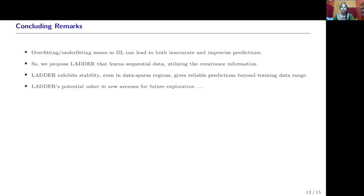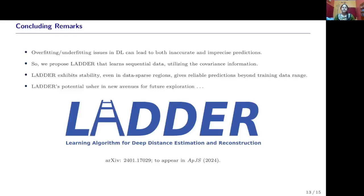Here, I will summarize my key takeaways. Given the possibility of overfitting and underfitting issues with deep learning that can lead to inaccurate and imprecise predictions in the context of cosmology, we hereby propose LADDER that learns sequential data utilizing the full covariance information within the data points. Reconstruction with LADDER exhibits stability even in data-sparse regions that can give reliable predictions beyond the training data range. Given the initial success, LADDER's potential will open up new avenues for future exploration. LADDER has been accepted for publication in the ApJ Supplemental Series.